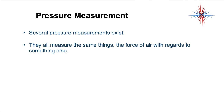Let's talk about pressure measurements, because if you don't measure, you don't know. Several pressure measurements exist, and they all measure the same thing: the force of air with regards to something else. We work on right angles. The pressure in a building is measured with regards to the pressure outside the building. The pressure in ductwork is compared to the pressure in the building, and so on. You always measure pressure in one area with regards to pressure in something else.